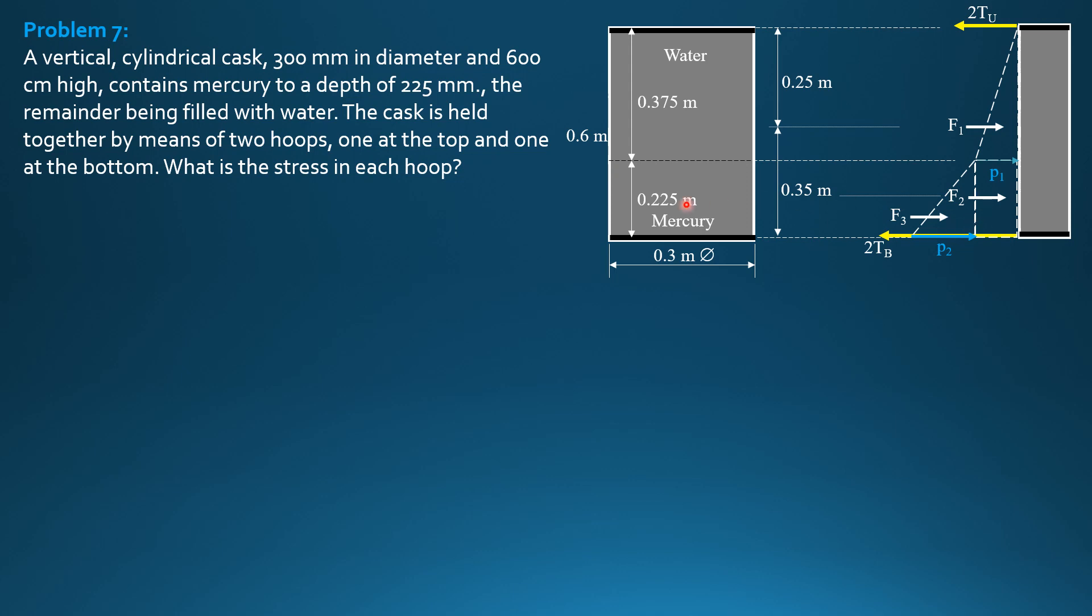F2, this is 0.225, so half of 0.225 is 0.1125 from the bottom. Then its distance from the top is 0.6 minus 0.1125, so 0.4875 meter.